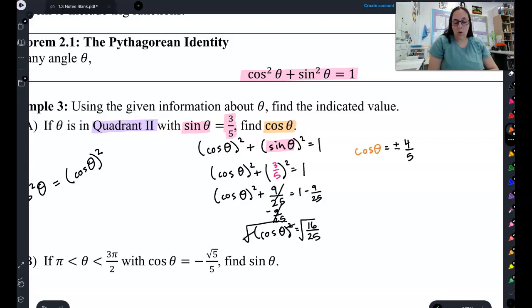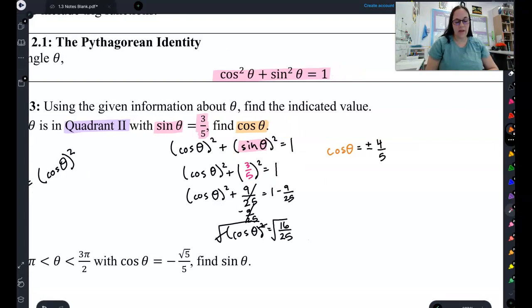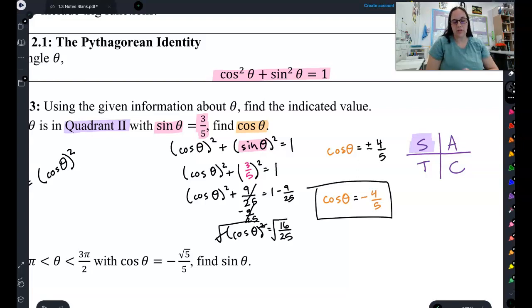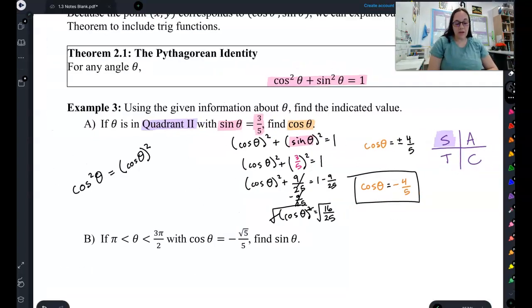However, only one of these is correct. It is either positive 4 fifths or it is negative 4 fifths. And that is where this little piece of information comes in. We know that our angle is in quadrant 2. So, if I do all students take calculus, I'm in quadrant 2. So, we know from the S that in quadrant 2, sine is positive, which means all the other ones are negative. So, that means that this cosine value needs to be a negative 4 fifths because it's in quadrant 2. And that's how we use the Pythagorean identity.